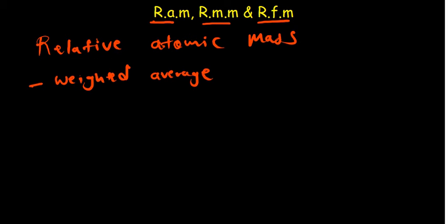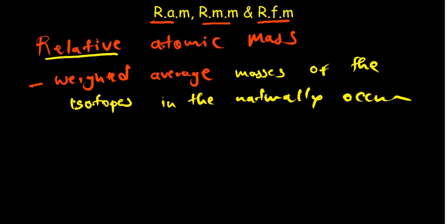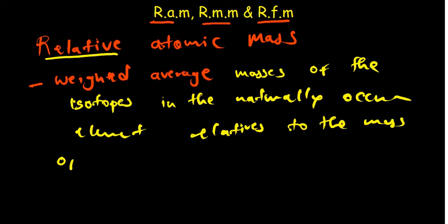So you find the weighted average of the masses of the isotopes of the element that occur naturally, relative to the mass of an atom of the carbon-12 isotope. Basically, what you get is a relative atomic mass. 'Relative' implies you are comparing against something — you compare the weighted average masses of the isotopes in the naturally occurring element relative to the mass of an atom of carbon-12.